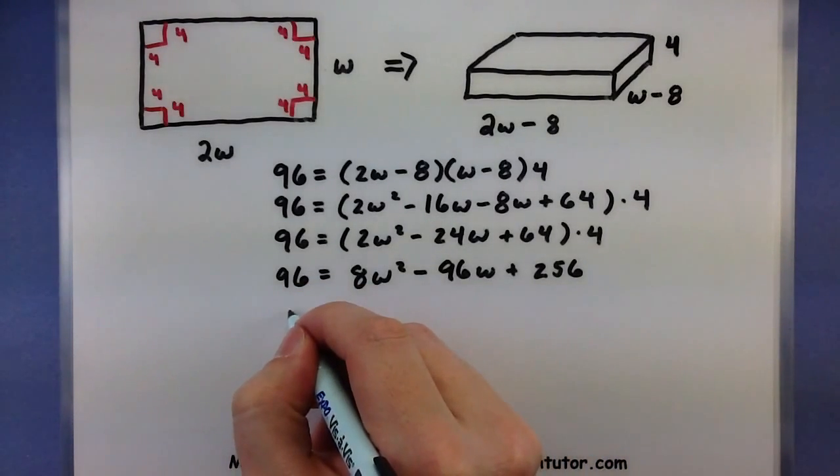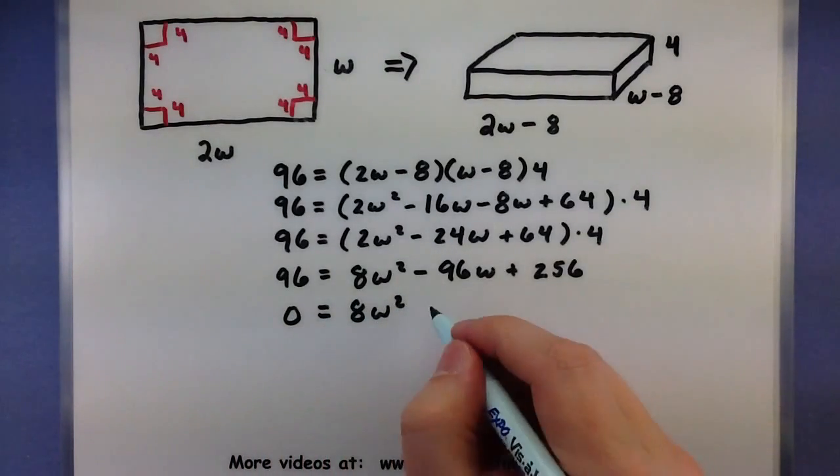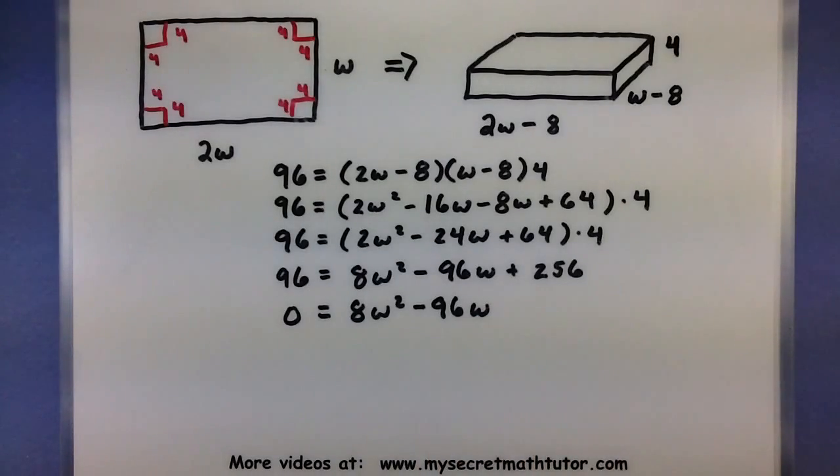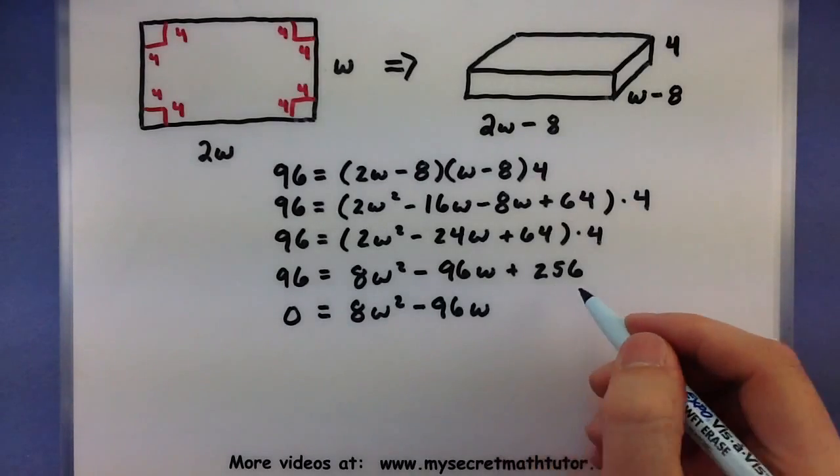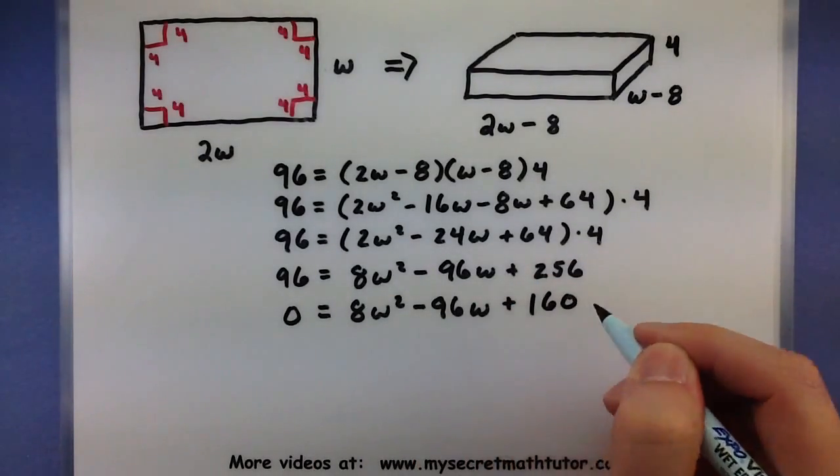Alright. Finally, let's go ahead and subtract 96 from both sides. That way we can get a 0 on one side of our quadratic. Now the only thing that we'll really be able to subtract 96 from is this 256. It's the only like term in there. So 256 minus 96, 160. Awesome.